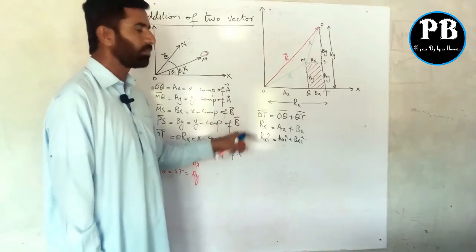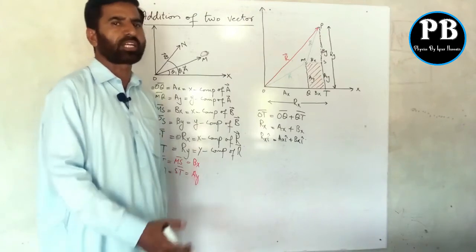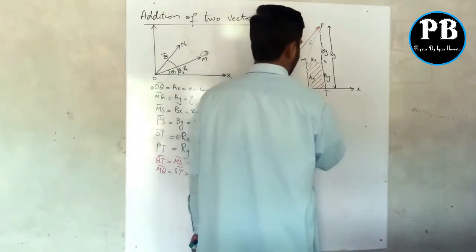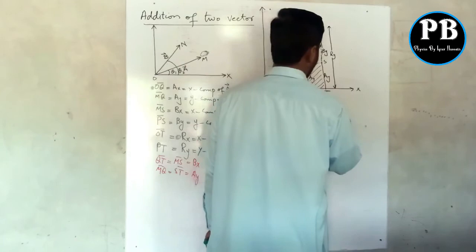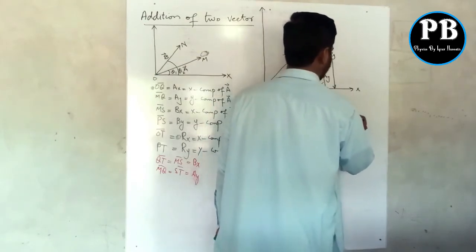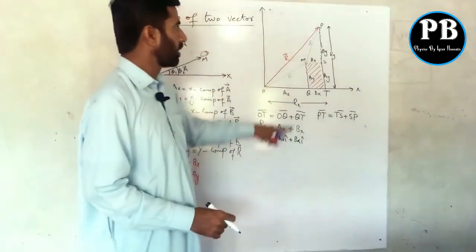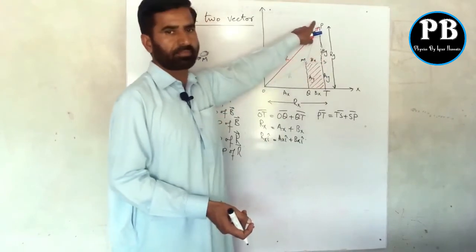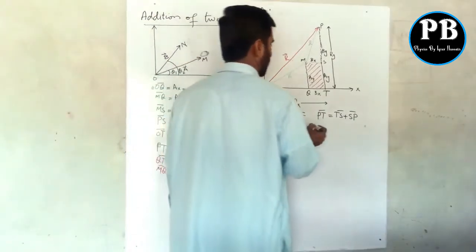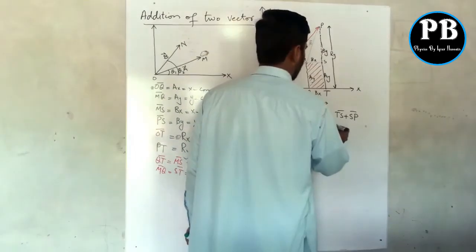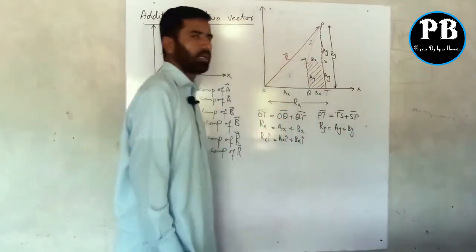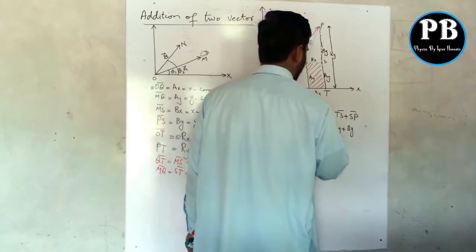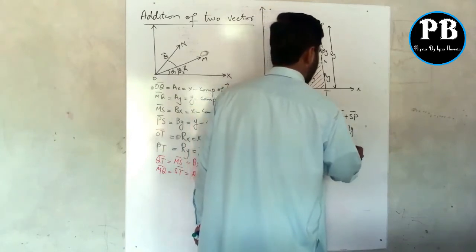Similarly, we find the resultant y-component. PT consists of two parts: TS plus SP. Putting in the magnitudes of these vectors, we get Ry equals Ay plus By. This is the magnitude form, and in vector form: Ry*j equals Ay*j plus By*j.